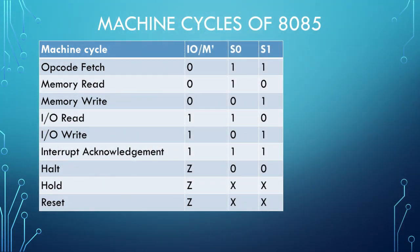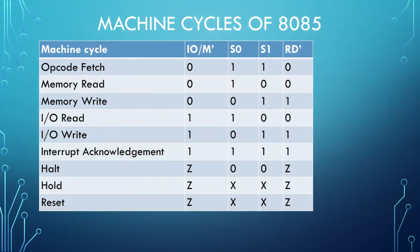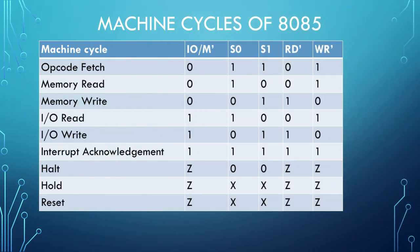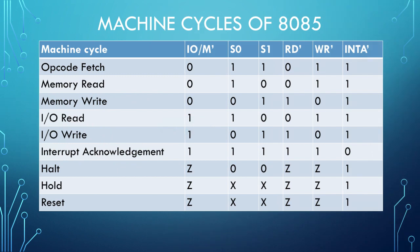S0 and S1 are status lines and their value is 11 for opcode fetch. When any reading operation is performed, the value of S1, S0 is 10. For writing operation it is 01 and for halt it is 00. It has 11 value for interrupt acknowledgement as well. Then we have the read bar signal. Read bar signal goes low only when the microprocessor performs a reading operation, and write bar signal goes low when the microprocessor performs a writing operation. Lastly, we have interrupt acknowledgement, that is INTA bar. This signal goes low only when the microprocessor receives the INTR interrupt. It acknowledges this interrupt using INTA bar, and INTA bar is used as the read bar signal by the processor.